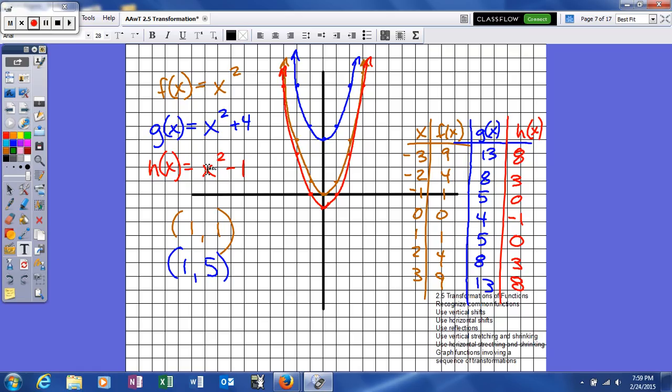And then on h, what we're doing is this time we have x squared minus 1. So now our d is a negative 1, so the effect of that is when you square all these, we're going to take 1 away. And the effect of the graph is we're going to basically shift it down 1.